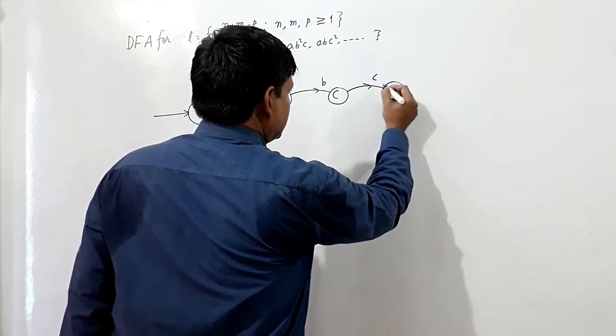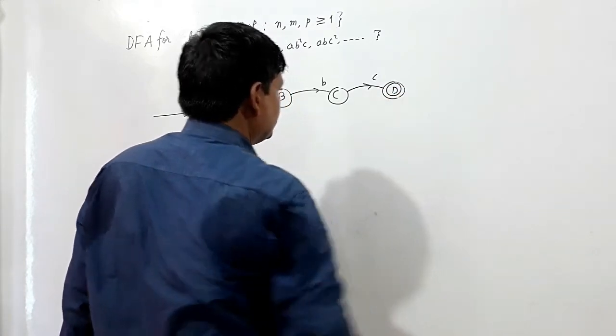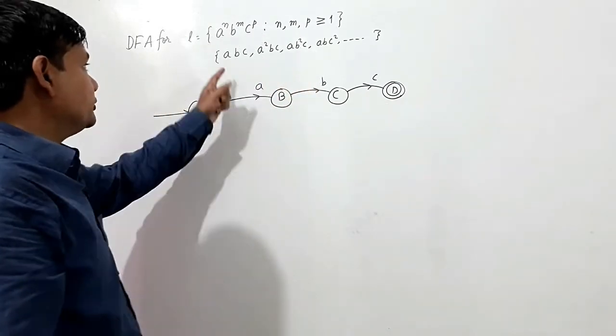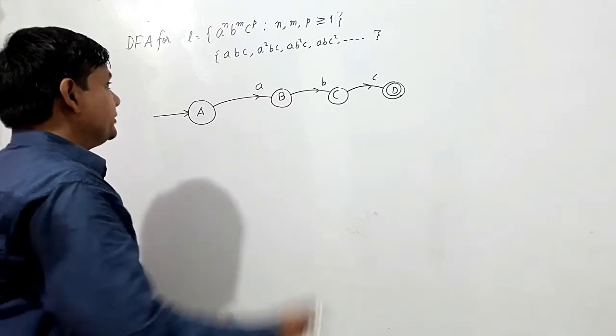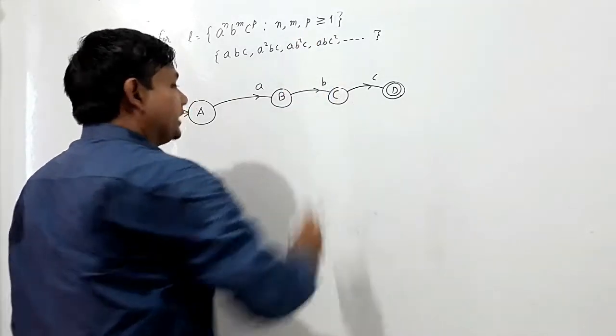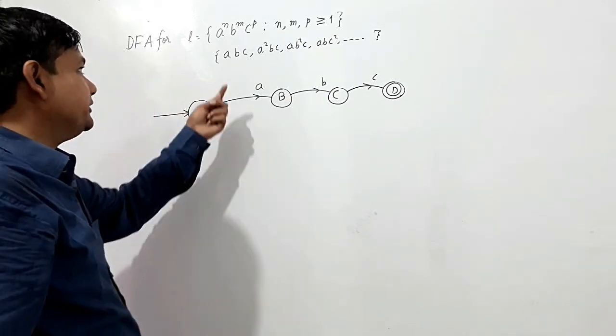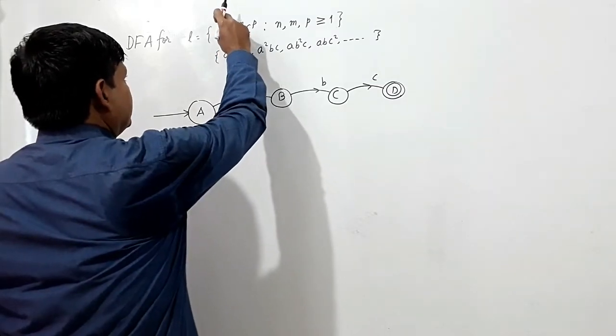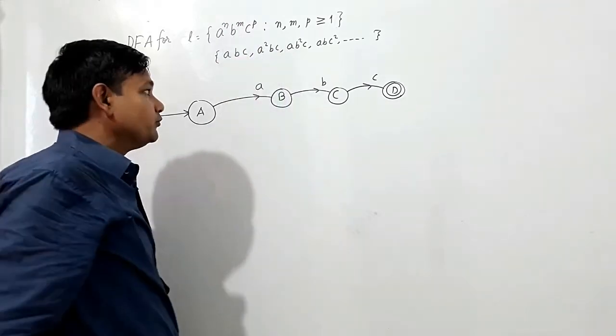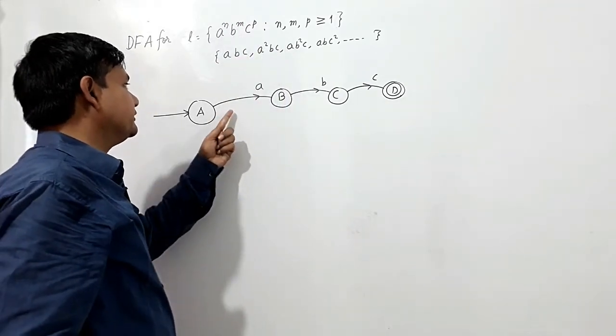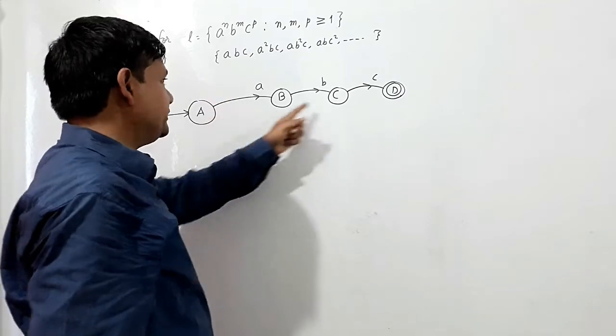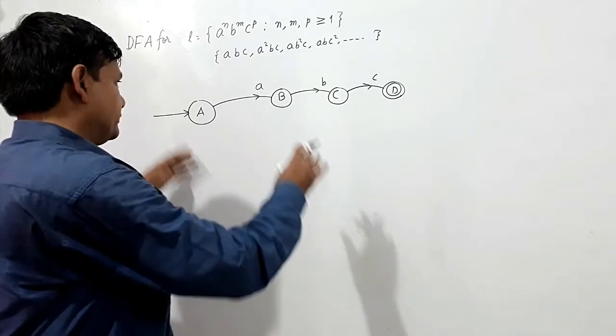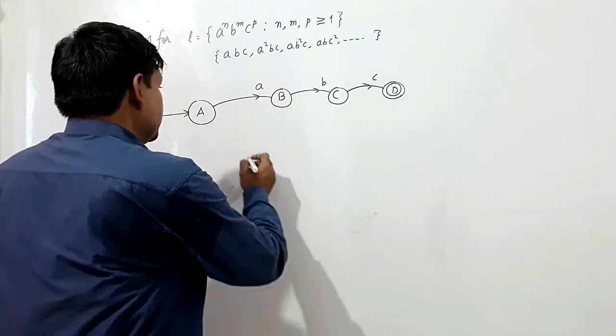So abc should be accepted here because n, m and p are always greater than or equal to 1, so at least we have to take these values 1. Now these values 1 means n equals 1, m equals 1 and p equals 1. So for accepting this string abc we shall have this structure of the DFA.